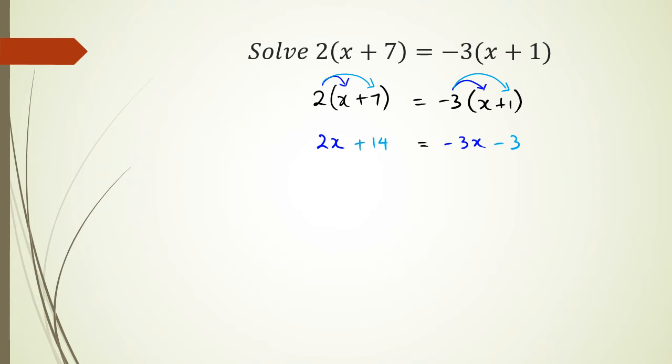So basically at this point you are just rearranging things to make x the subject and get rid of all the numbers to the other side. So what we have is 2x + 14 = -3x - 3.